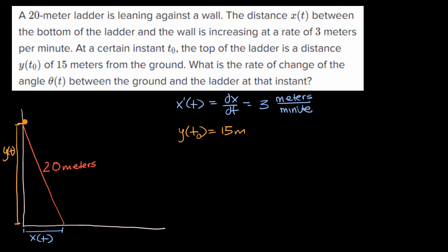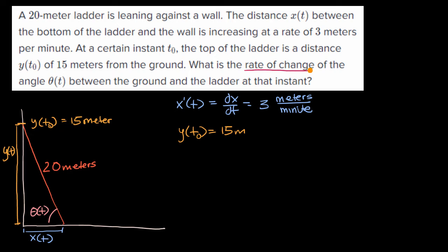They want to know the rate of change of the angle theta between the ground and the ladder — theta is also going to change with respect to time, it's a function of time. In these related rates problems, we want to set up an algebraic equation, maybe with a little trigonometry, that relates the things we care about. Then we take the derivative of both sides to relate the related rates. We want to figure out theta'(t₀).